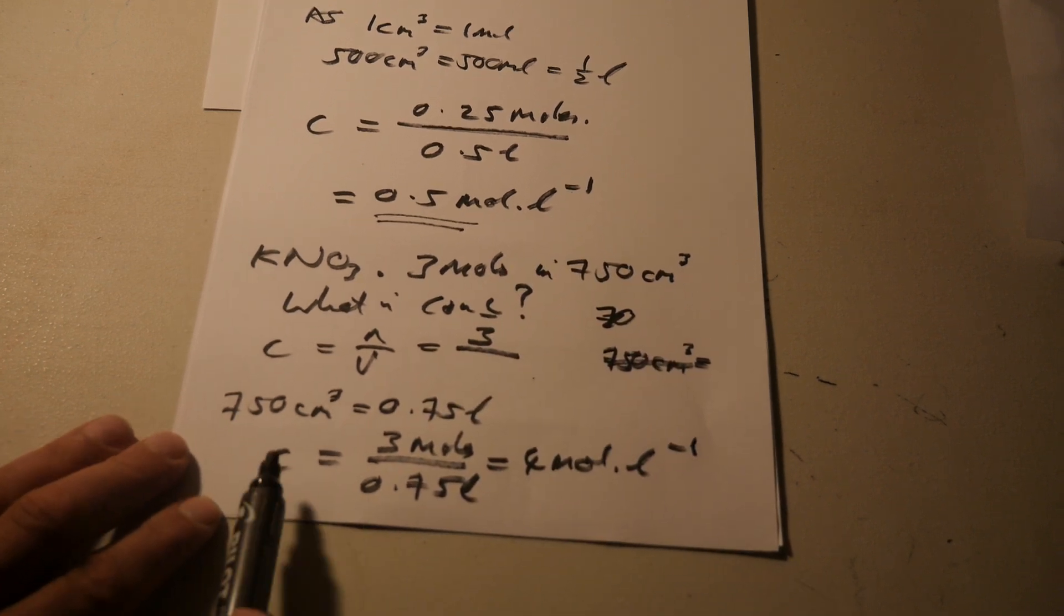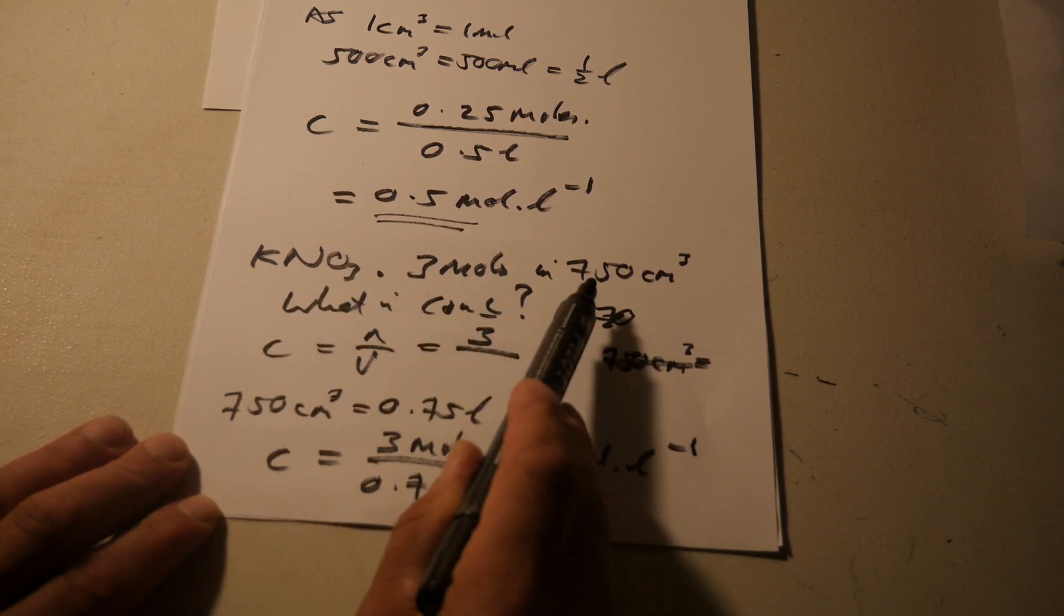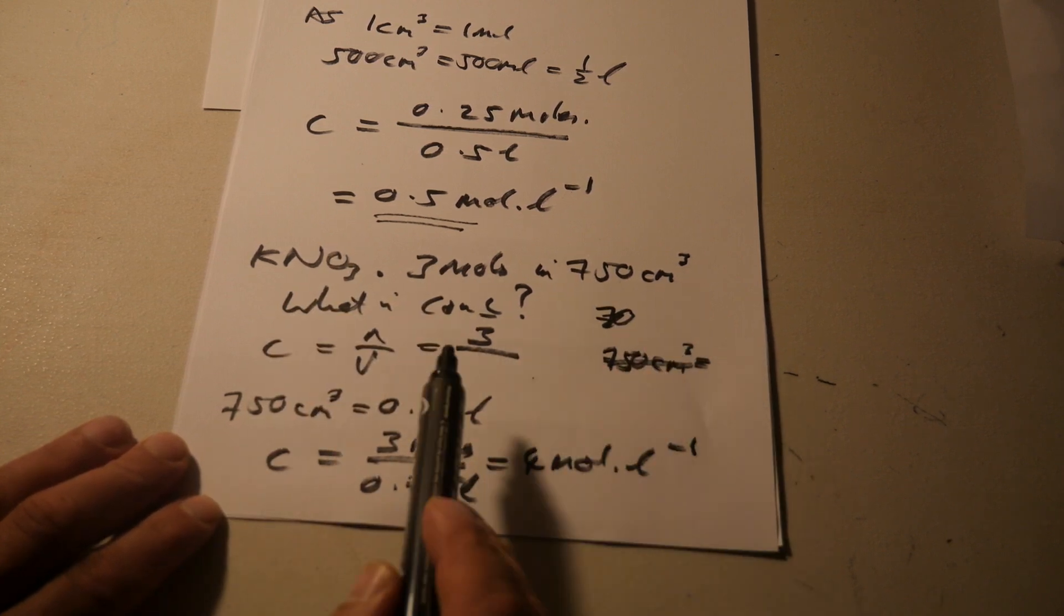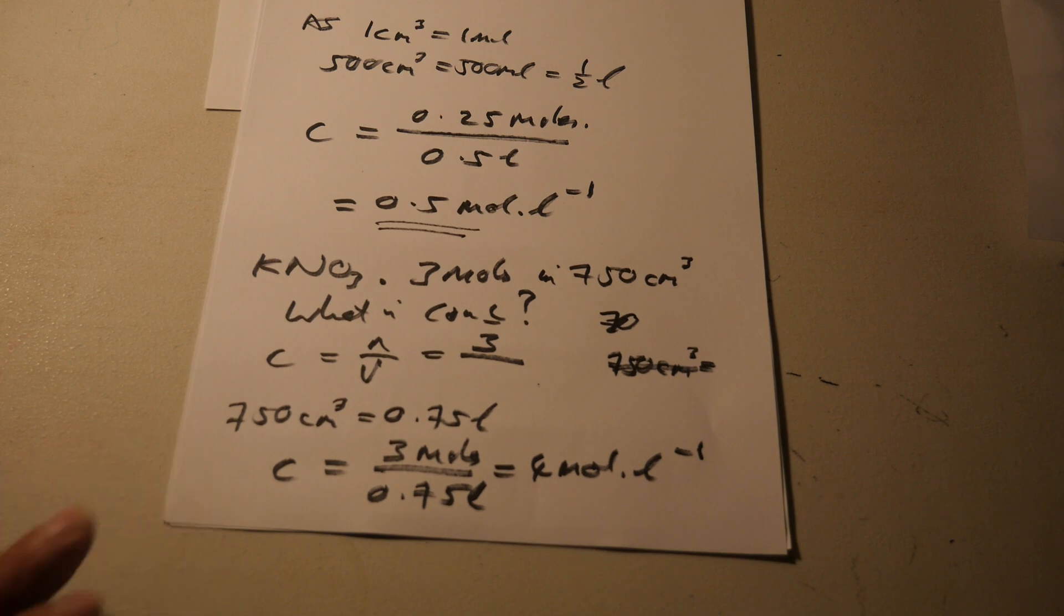So, yeah. Concentration of this, 3 moles of potassium nitrate in 750 cubic centimeters is a solution. What's the concentration? 3 divided by 0.75 liters, which is 4 moles per liter. Thank you.